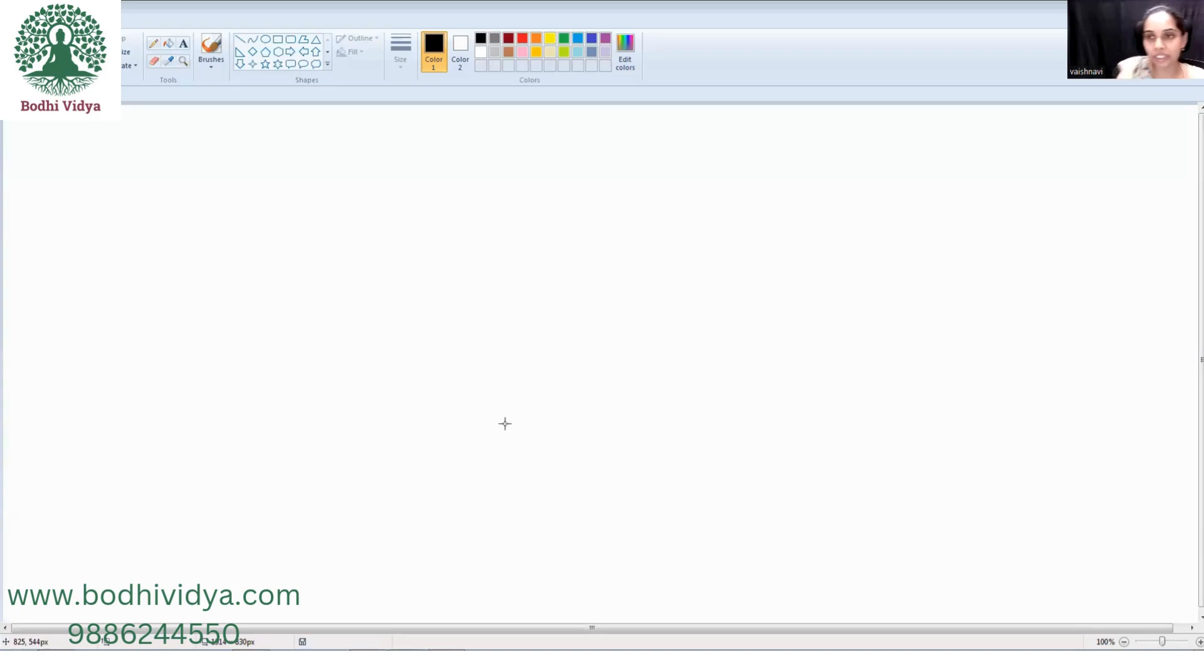Hi, hello, namaste. Welcome to Bodhividya. This is your Vaishnavi Naveen. In today's video, we shall learn a very nice and easy trick for how to multiply any number like 22, 33, 44, 66, 77 with any one-digit number.